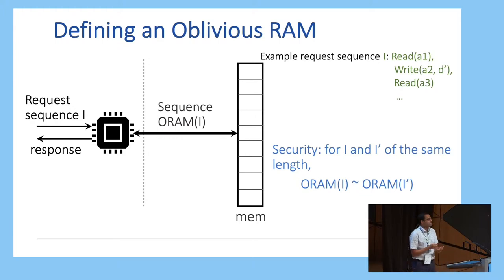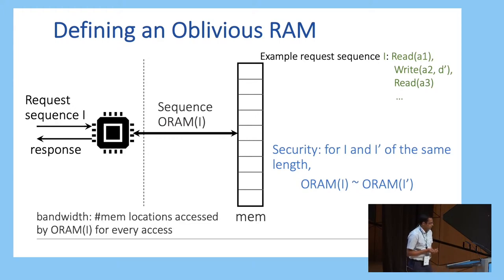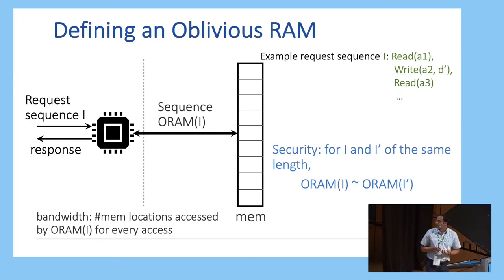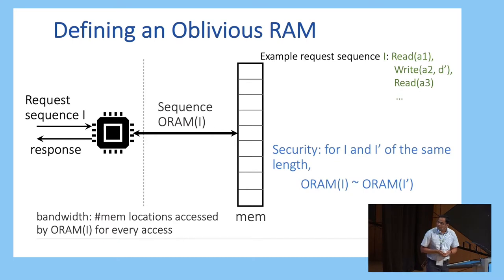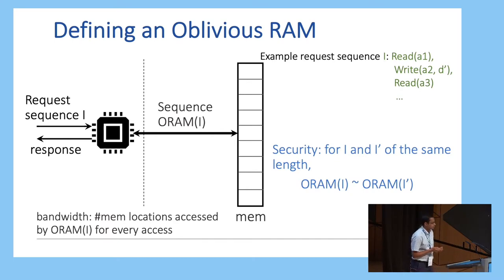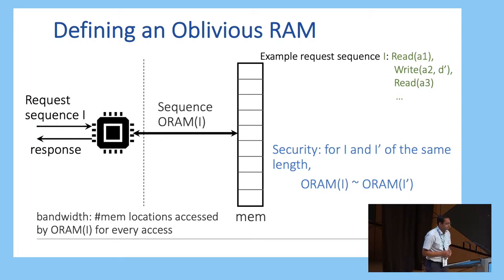Typically, when you are trying to obfuscate these accesses, you will end up accessing more memory locations than you would in a logical sequence. That is why one important metric you are trying to reduce is bandwidth, or the number of memory locations you access for every logical access.